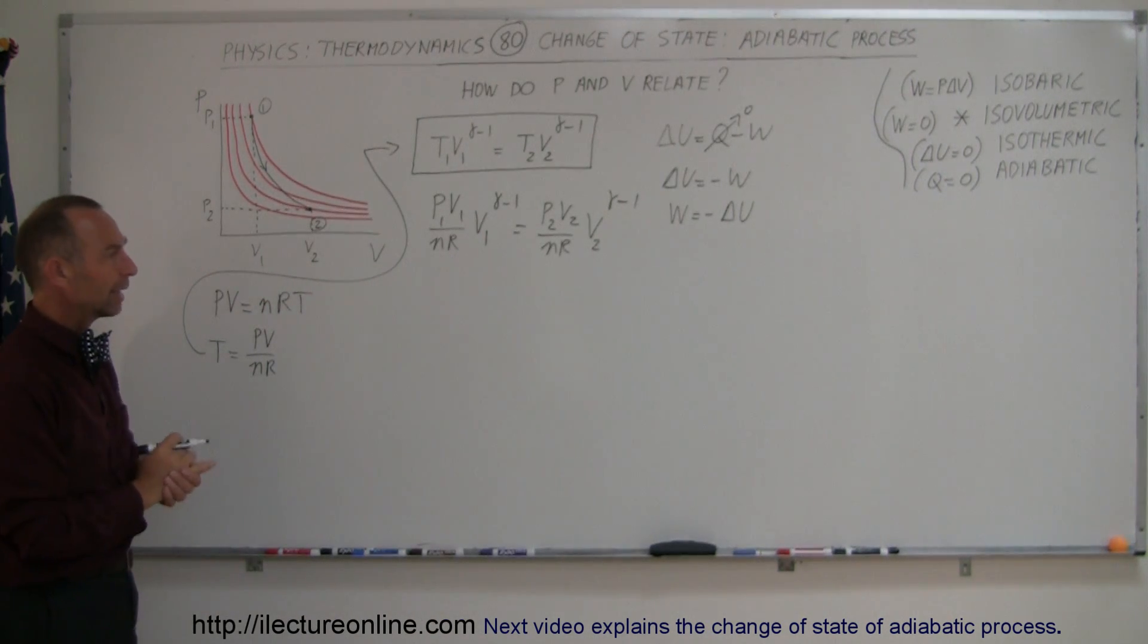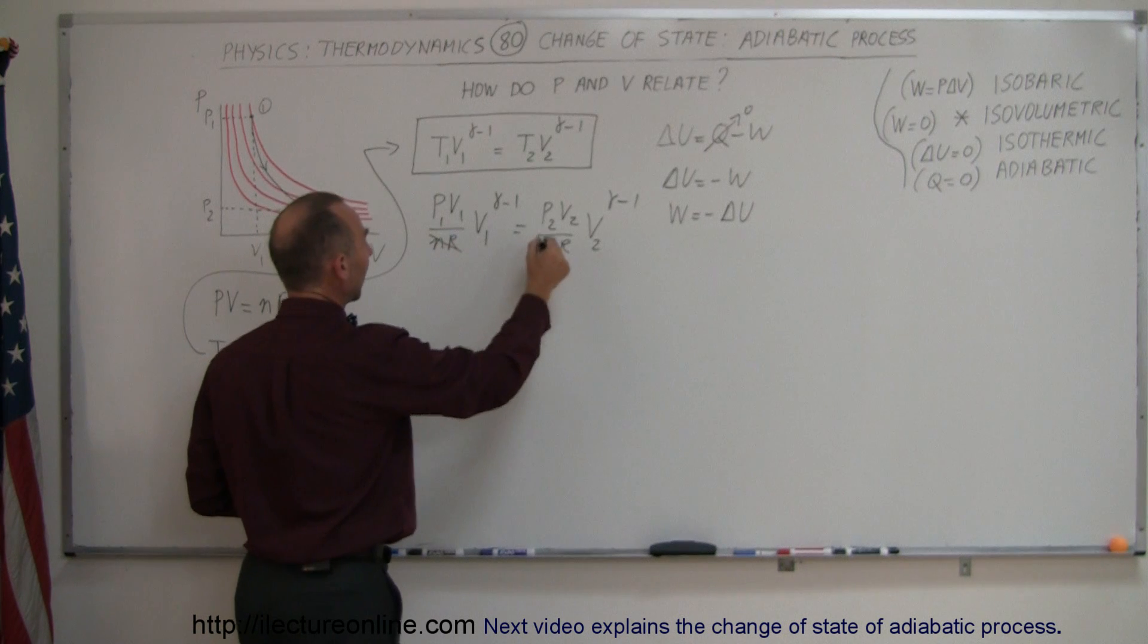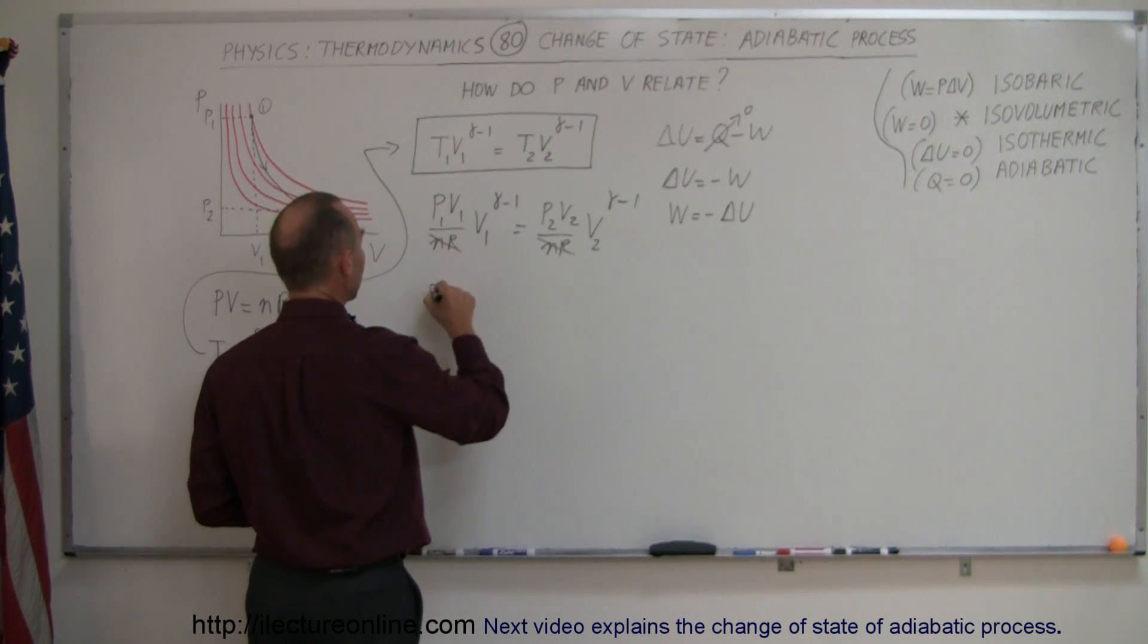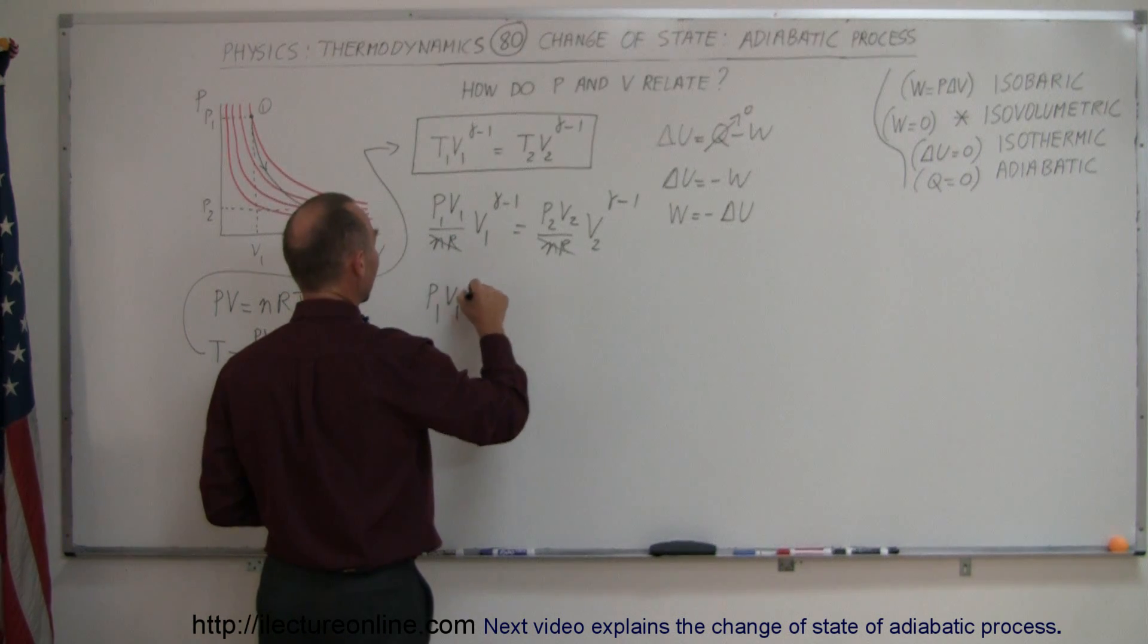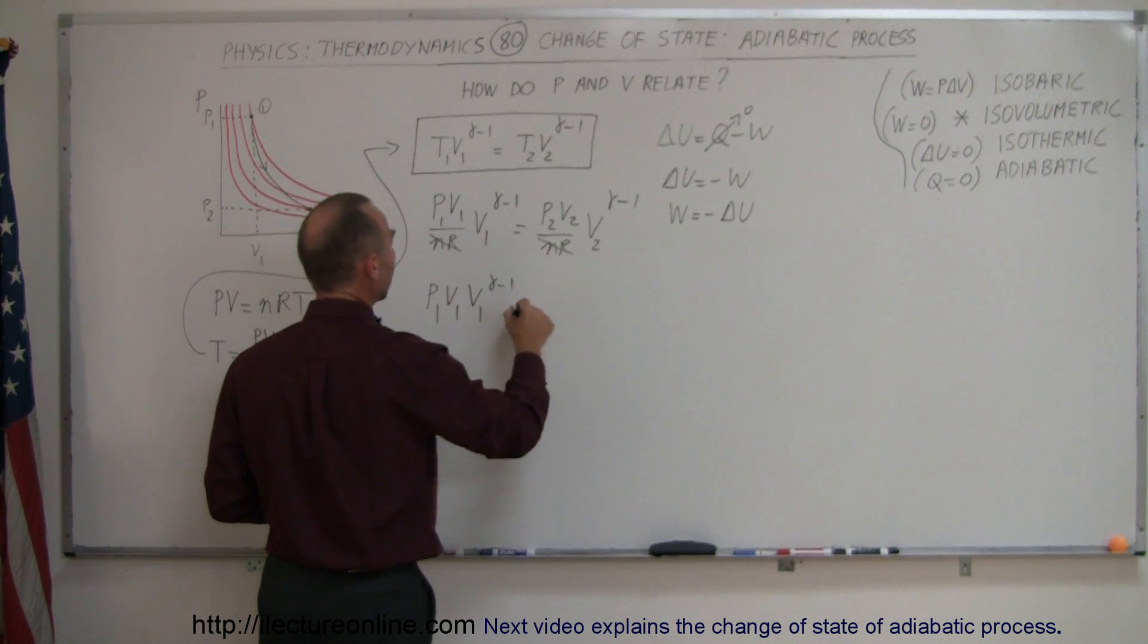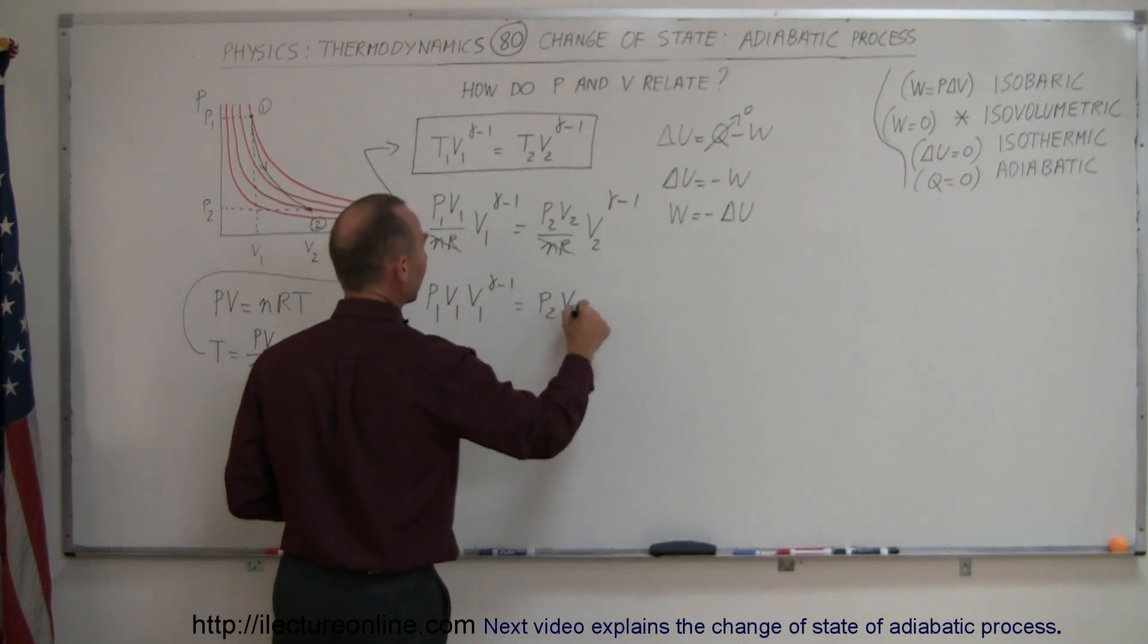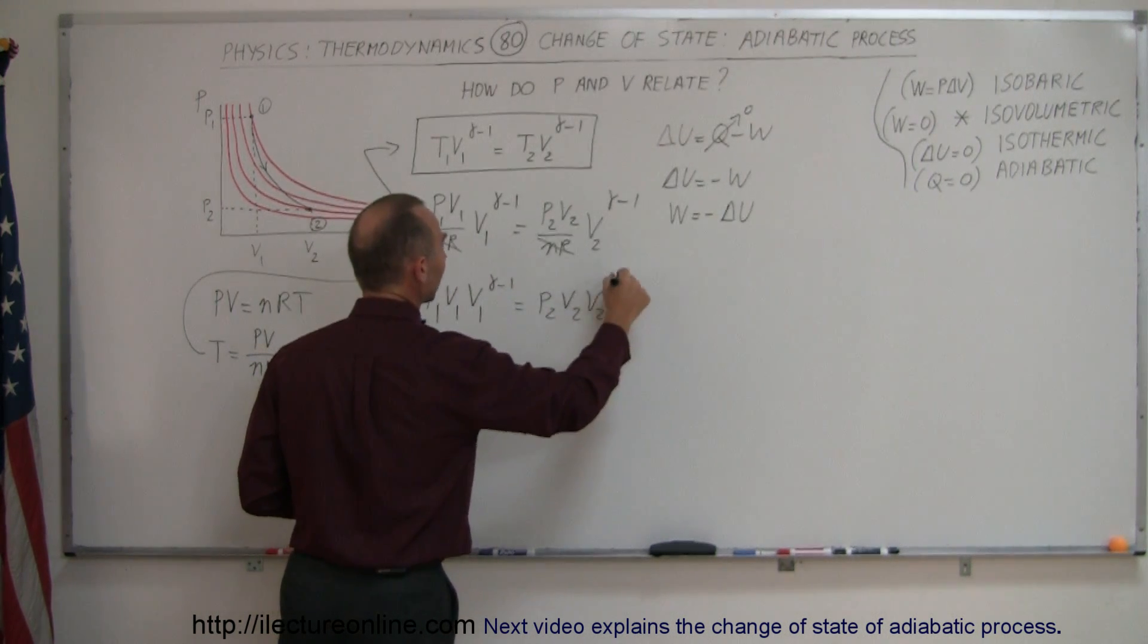Notice that on both sides of the equation we have divided by NR, and NR are constants so we can cancel that out. Our equation now becomes P1 V1 times V1 to the gamma minus 1 equals P2 V2 times V2 to the gamma minus 1.